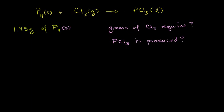So let's make sure. On the left hand side, this molecule of phosphorus has four phosphorus atoms. So all of our reactants combined have four phosphorus atoms. Our products need to also have four phosphorus atoms, but the way it's written right now, I only have one. So let me multiply this by four. Now I have four phosphorus atoms on both sides of the equation.